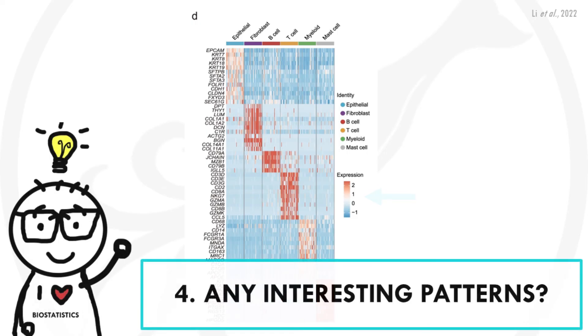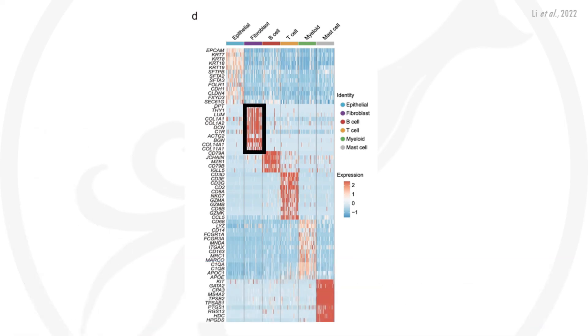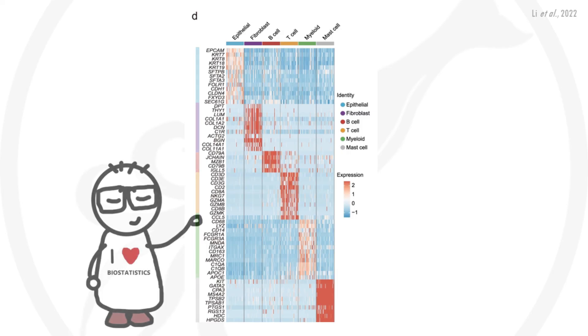And finally we can check if we can identify any interesting patterns. You can clearly see there are six up-regulated gene set clusters for each of the six cell types. If you go to the original publication, you will find out that the genes are actually gene markers that help identify the cell types. So this heatmap just shows that the cell type annotations and the gene expression of cell type markers match.